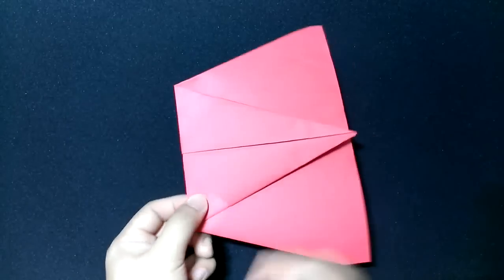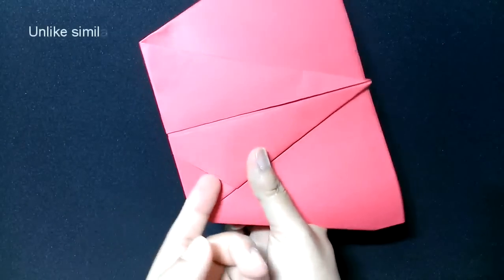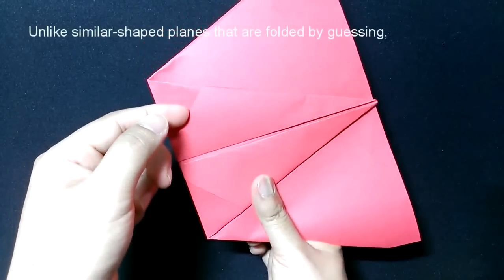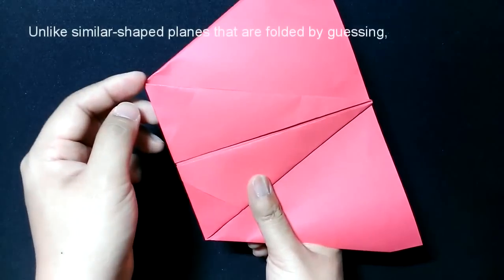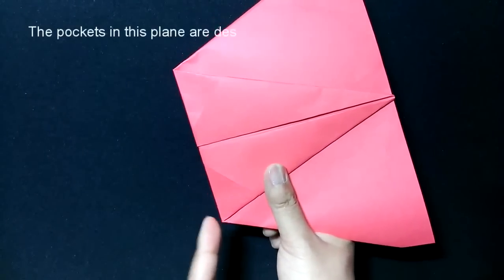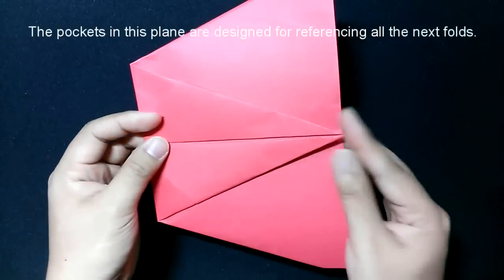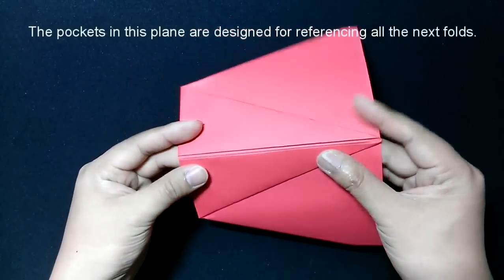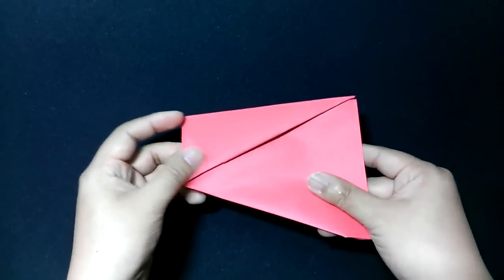Now, as you can see here, we have a pocket over here and we have another pocket over there. We will insert this corner into this pocket, as well as this corner into this pocket. But to do that, I will fold the paper in half first, as you can see here.